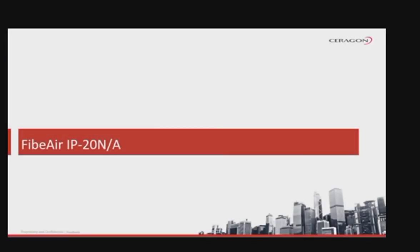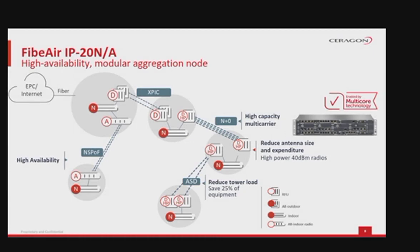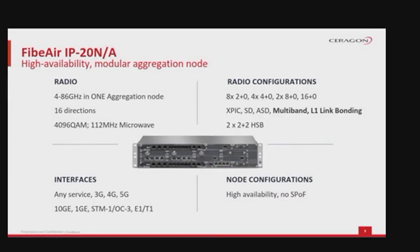Saragon IP20N is for the ETSI market and IP20A is for the FCC market. This high capacity split-mount aggregation node has a small footprint, high density, and a high degree of scalability and availability. IP20N is designed to accommodate future needs as a high capacity modular aggregation node that can be expanded as the network requires, and can be integrated with the industry-first multi-core split-mount radio.